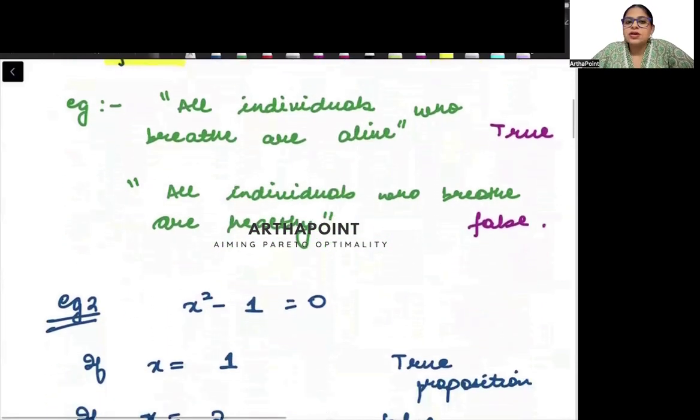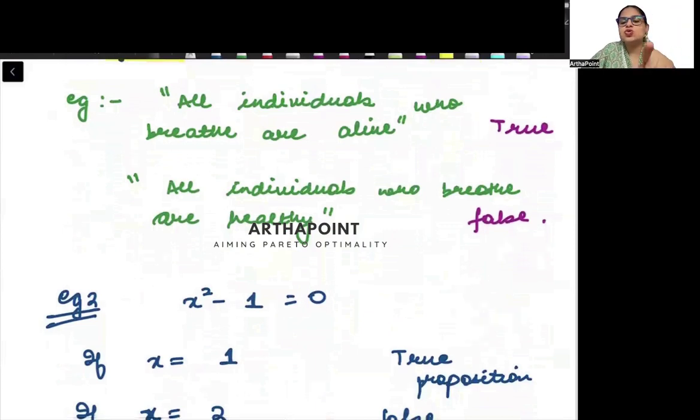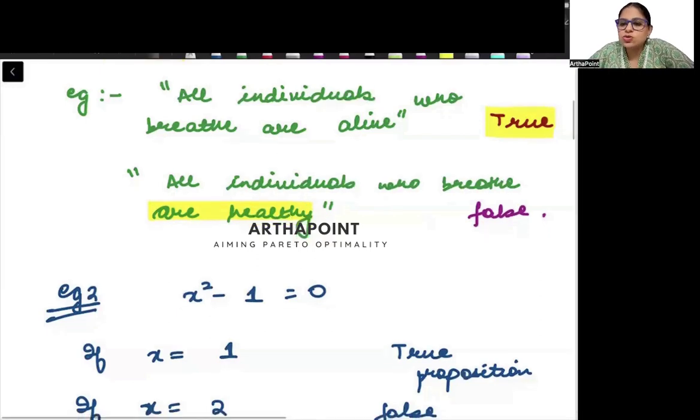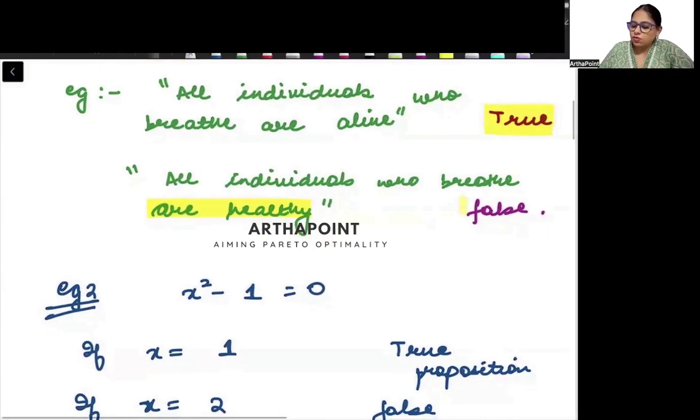For example, when I say all individuals who breathe are alive. Jo bhi saans le sakte hai, wo zinda hai. All individuals who can breathe are alive. This is a true statement. If you can breathe, you are alive. This is a true proposition. Similarly, when I say all individuals who breathe are healthy, this is false. Even if I am breathing, agar mai saans le rahi hoon, toh mai bimaar bhi ho sakthi hoon. I can also be non-healthy. I can be sick. So this is a false statement.